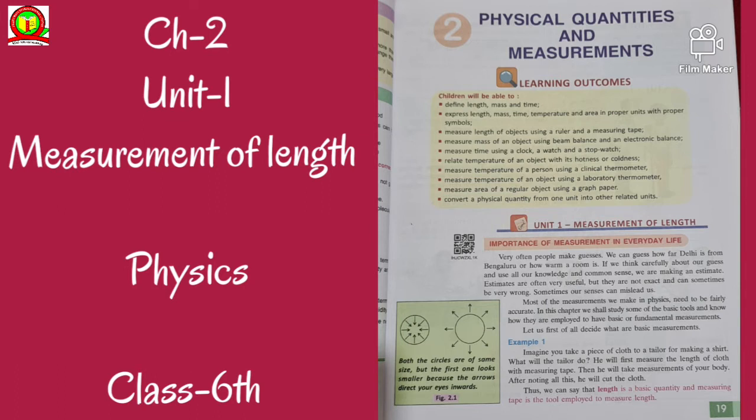The chapter's name is Measurement of Length. Importance of measurement in everyday life: very often people make guesses. We can guess how far Delhi is from Bangalore or how warm a room is. If we think carefully about our guess and use all our knowledge and common sense, we are making an estimate. Estimates are often very useful but they are not exact and can sometimes be very wrong. Sometimes our senses can mislead us. Most of the measurements we make in physics need to be firmly accurate. In this chapter we shall study some of the basic tools and know how they are employed to have basic or fundamental measurements.